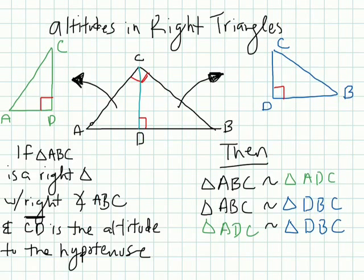That's what an altitude is. It comes out of the vertex and hits perpendicular to the opposite side. In this case, since this is a right triangle, its opposite side is the hypotenuse.